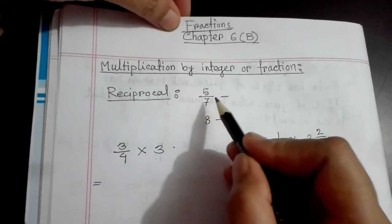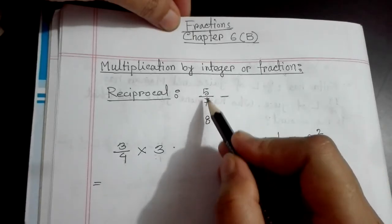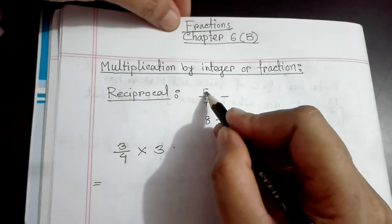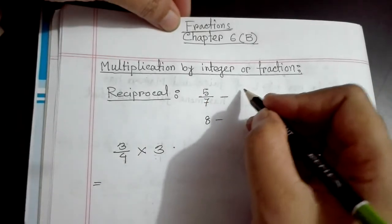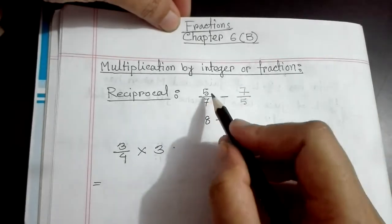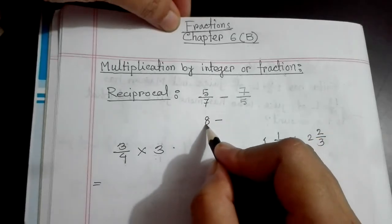Look here. This is 5 by 7. This is a fraction. If we inverse it, or turn it upside down, 5 by 7 becomes 7 by 5. This is the reciprocal of 5 by 7.